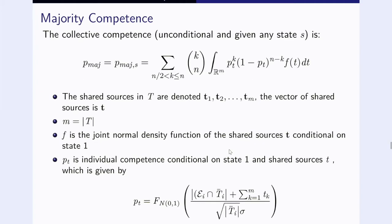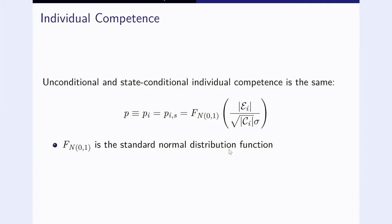Perhaps it's nice to see on this formula that if the person has more evidential sources, if EI is larger, then this competence goes up because the standard normal distribution function is evaluated at a higher number. Whereas if on the denominator, the CI square root goes up because there are more uninformative causes to your vote, the room temperature pushes you around, the background music distracts you, that deteriorates the quality of your vote and therefore your competence goes down.